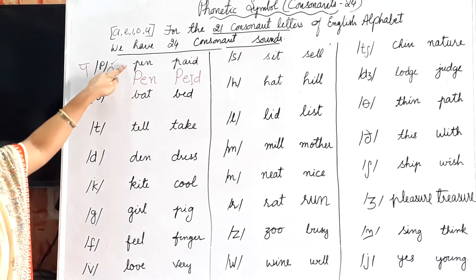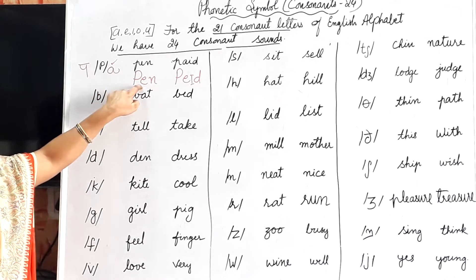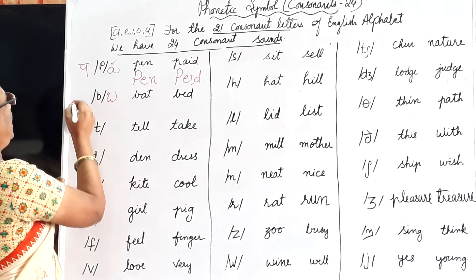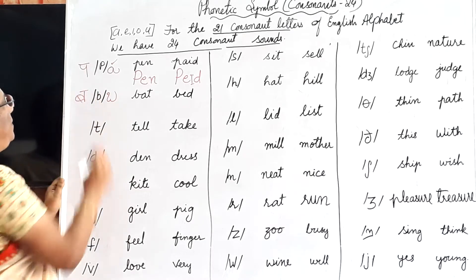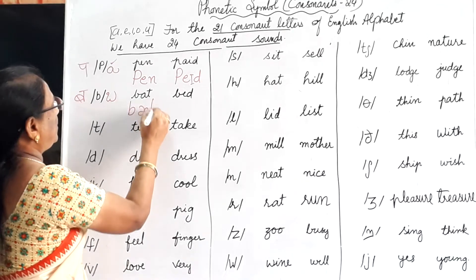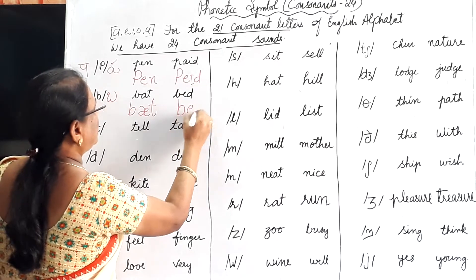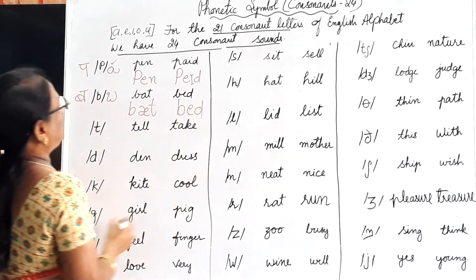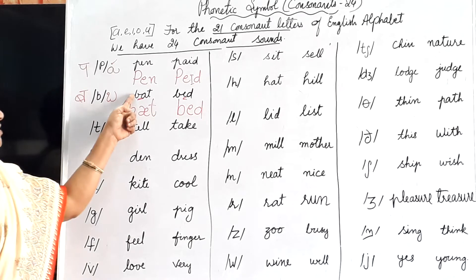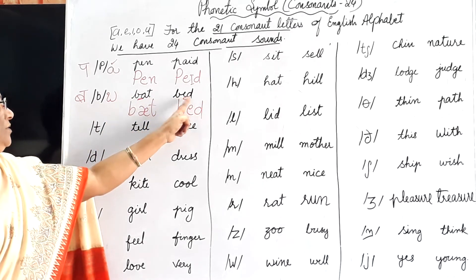Now B gives the /b/ sound. Bad — see, focus on the consonant and vowel: consonant, vowel, consonant, vowel. B as it is — /b/. Bad.